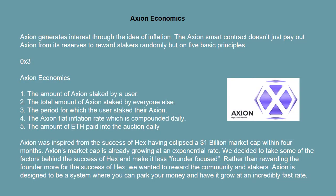Axion generates interest through the idea of inflation. The Axion smart contract doesn't just pay out Axion from its reserves to reward stakers randomly, but on 5 basic principles.